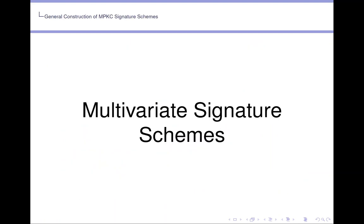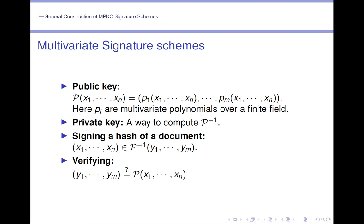Multivariate signature schemes. In the multivariate signature scheme the public key P is an m-tuple of multivariate polynomials over a finite field. The private key is a way to compute P inverse. By P inverse we do not necessarily mean that P is an invertible function, merely that we have a way of generating pre-images.